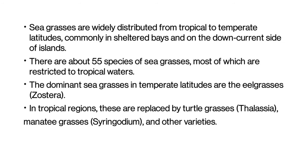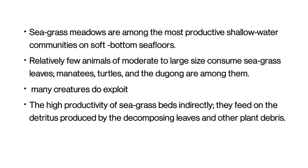Seagrass meadows are among the most productive shallow water communities on soft bottom seafloor. Relatively few animals of moderate to large size consume seagrass leaves — manatees, turtles and dugongs are among them. The high productivity of seagrass beds indirectly supports many animals; they feed on the detritus produced by the decomposing leaves and other plant debris.